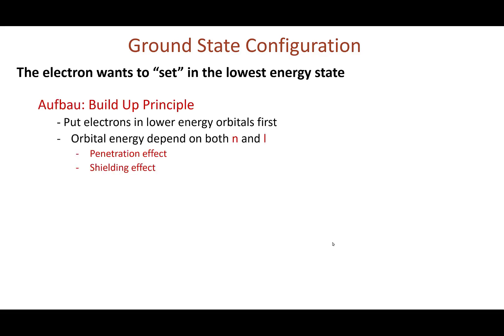The first principle is called the Aufbau principle, or the build-up principle, which states that electrons must be placed in lower energy orbitals first. However, orbital energies depend on both the n quantum number and the L quantum number. That is an effect of two phenomena: one is called the penetration effect and the second is called the shielding effect. We will discuss these two effects and how they affect the energy of different orbitals.